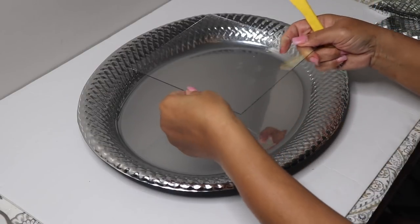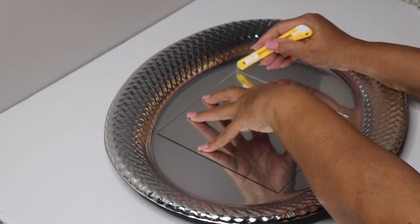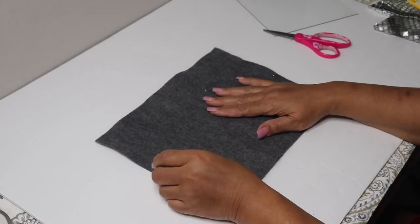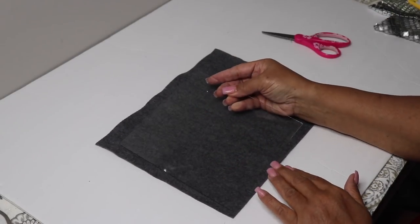I'm cutting this Dollar Tree tray to make a mirror background for my picture. I traced one of the sheets of glass onto it with a utility knife and then cut it out. I also traced the glass onto this piece of felt and then cut it out as well.